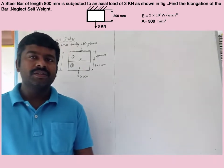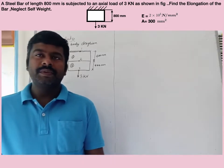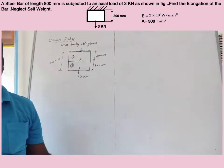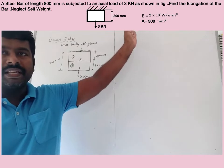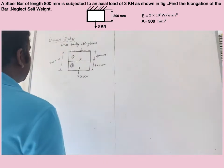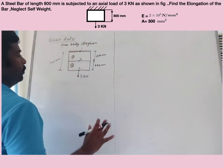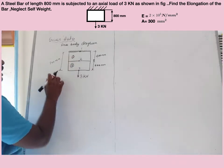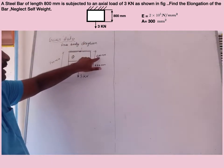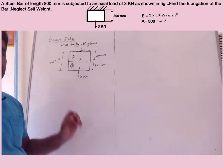Hello everyone. Today I will solve a problem based on the bar element finite element equation. The given question is: a steel bar of length 800 mm is subjected to an axial load of 3 kilo Newton as shown in the figure. Find the elongation of the bar and neglect self-weight. First, draw the free body diagram. The bar is discretized into two elements — element 1 and element 2 — of equal lengths 400 mm, with three nodes: node 1, node 2, and node 3. The load vector is applied at node 3.